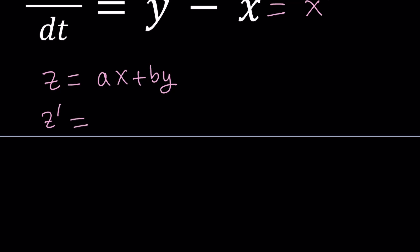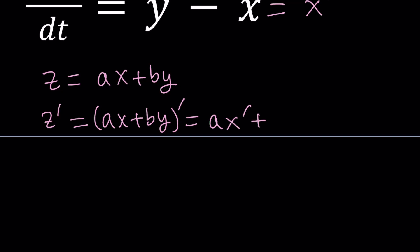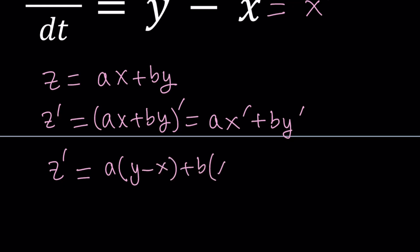So let's go ahead and evaluate z prime. Since x and y are functions, we're going to differentiate with respect to t. If you differentiate ax plus by, because a and b are constants, this is going to become ax prime plus by prime. Notice that I can replace x prime and y prime with something. So z prime becomes a times x prime, which is y minus x, plus b times y prime, which is x plus y plus 1.